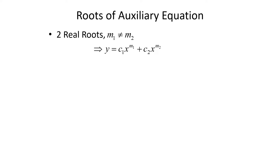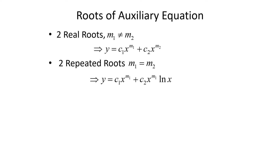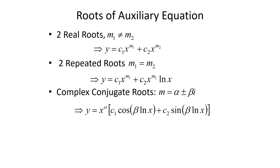Similar to linear homogeneous equations with constant coefficients, the solution depends on the roots. Case 1: two distinct real roots m1, m2 — solution is y = c1 x^{m1} + c2 x^{m2}. Case 2: repeated roots — solution is y = c1 x^{m1} + c2 x^{m1} ln x. Case 3: complex conjugate roots m = α ± βi — solution is y = x^α [c1 cos(β ln x) + c2 sin(β ln x)].